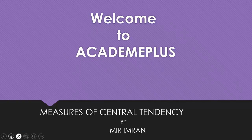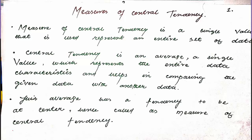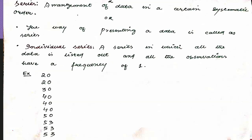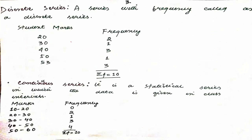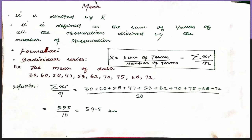Assalamu alaikum guys, this is Simran, welcome to Academy Plus. I hope you are all fine and doing well. As you know, in the last class we discussed central tendency, and we are going to continue that lecture. We discussed what it means, then we covered series types: individual series, discrete series, and continuous series. We also went through the mean and solved one example of mean given in individual series.